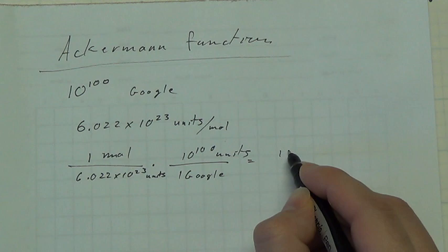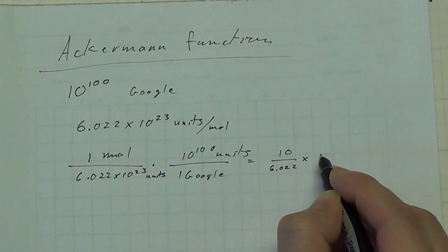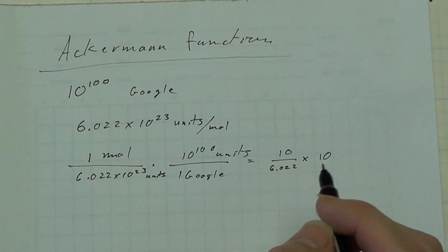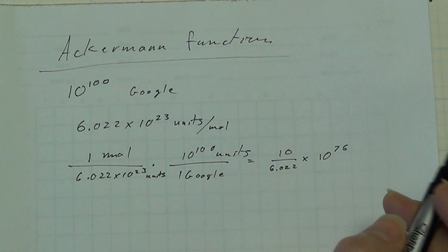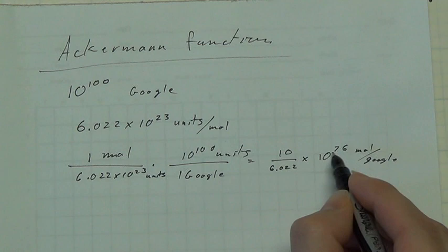pull a 10 out, 10 over 6.022 times 10 to the, and subtract, and we've pulled the 10 out, so 99 minus 23 is 76.